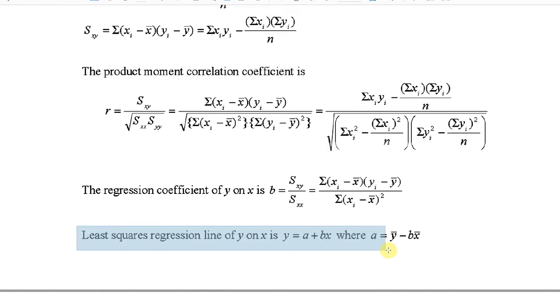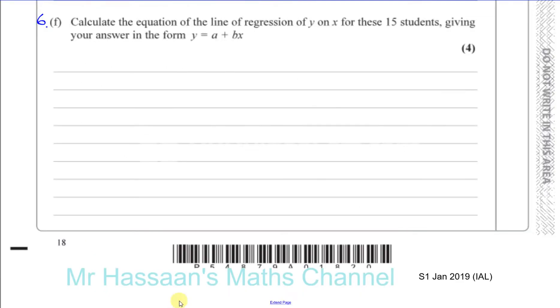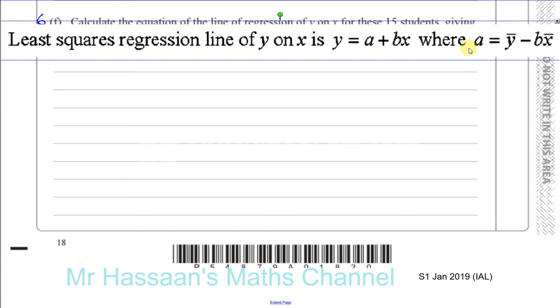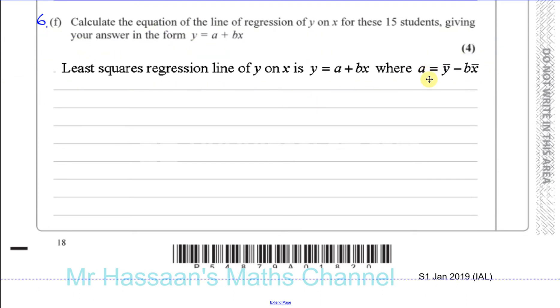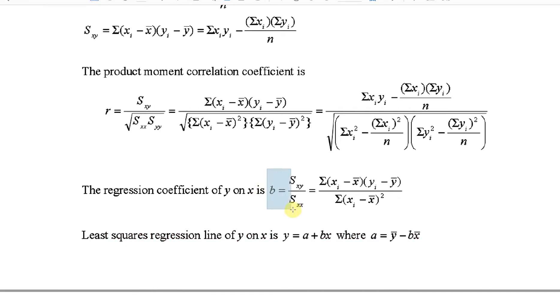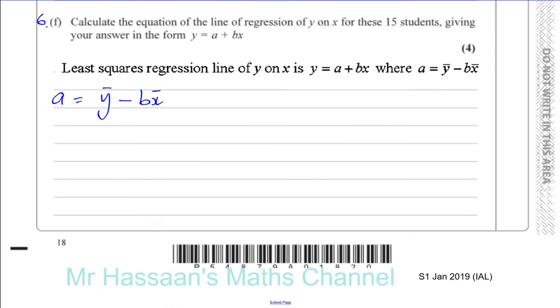We're told in the formula sheet the least squares regression line of y on x, and that's exactly what we need here, because our y corresponds to the y-axis of our plot, and our x corresponds to our x-axis. So y is equal to a plus bx. They've told us that the a part is equal to y-bar minus b times x-bar, and they also told us about b. If you go back to here, we'll see that b is equal to how x varies with y divided by how x varies with x. So we can find out what b is and then use that b value to find what a is and then write it in this equation.